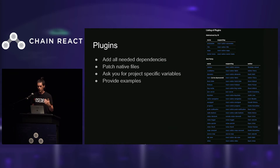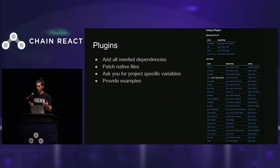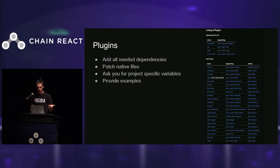How does it do that? The base of Ignite, like Reactotron, is plugins. There's a bunch of plugins out there for animations, icons, maps, and a lot more. Basically, what each of these plugins is going to do is add all the needed dependencies, patch the native files, and ask you for project-specific variables — variables you couldn't have hardcoded in your boilerplate because they're really per project. For example, on Android you need a Google API key for Google Maps, so the plugin is going to ask you for that variable and put it where it needs to be in your code. It will also provide examples on how to use that new capability.